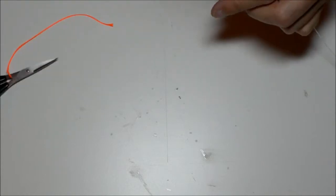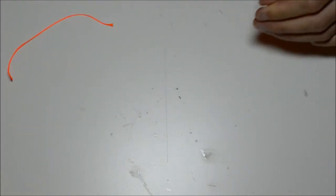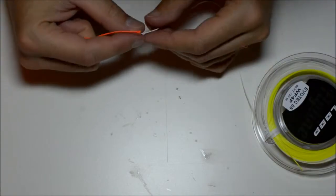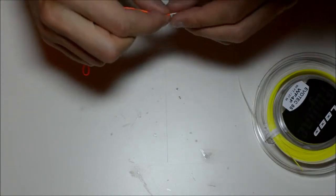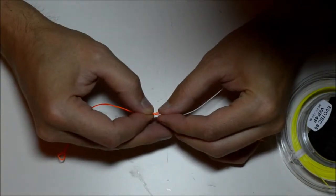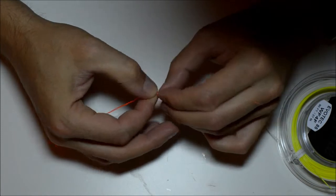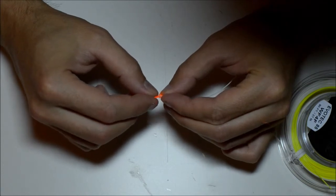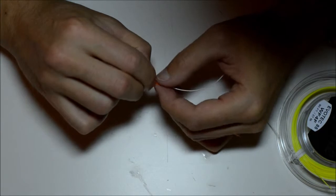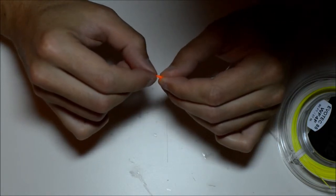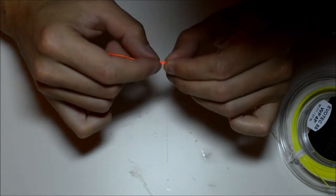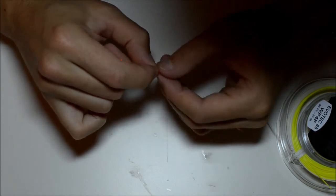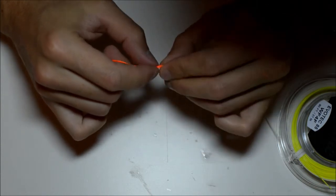So now we need to thread this over the fly line. It can be a bit tricky the first time. Especially with the thinner fly lines, I don't know why. I mean 7 weight, 8 weight, 9, 10 weight. It's really easy to do this with.